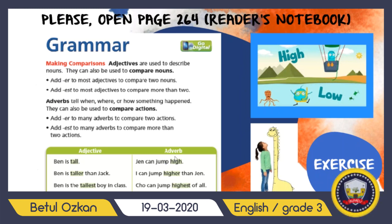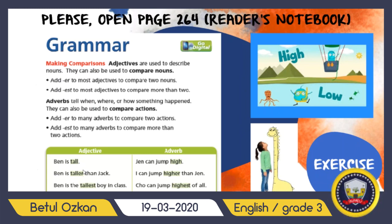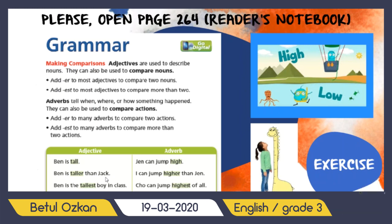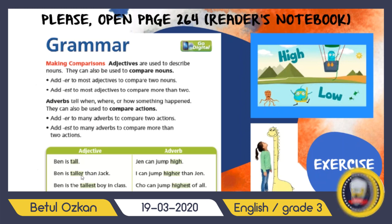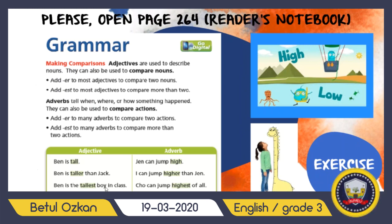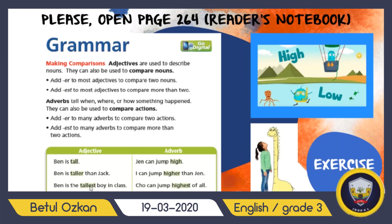For example: 'Ban is tall.' In the second sentence, 'Ban is taller than Jack' — I compare two people, Ban and Jack, so I add -er and use 'than.' In the third sentence, 'Ban is the tallest boy in the class' — I compare Ban with more than two people, so I add -est at the end of my adjective.